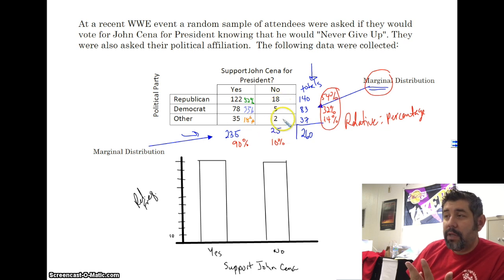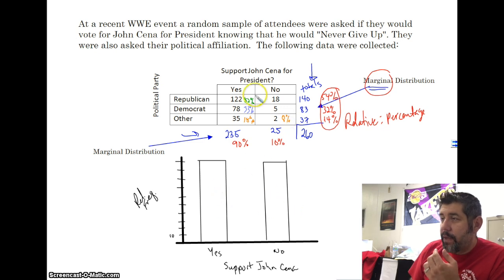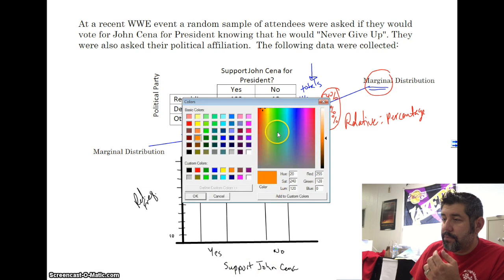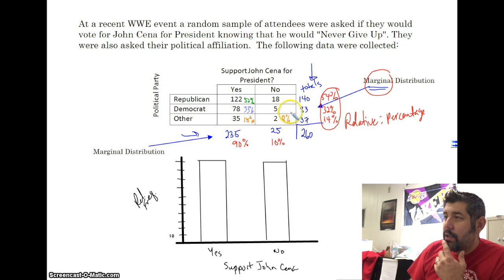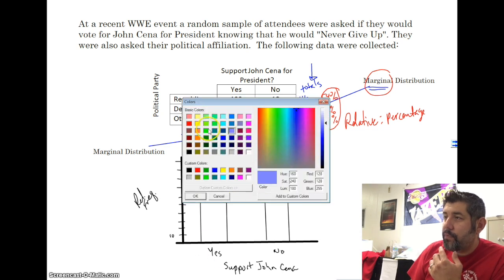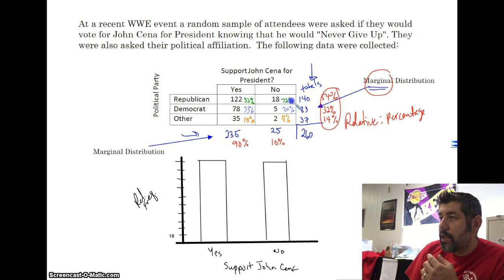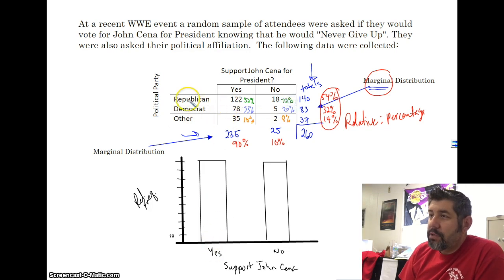For the no votes, I calculate 8% were Republican. I'll label these in the bar chart. For the no bar, Republican was about 72%.